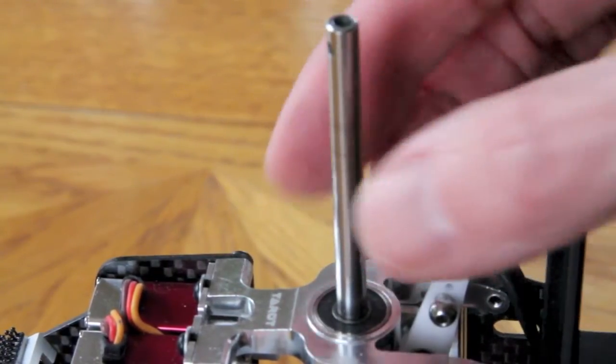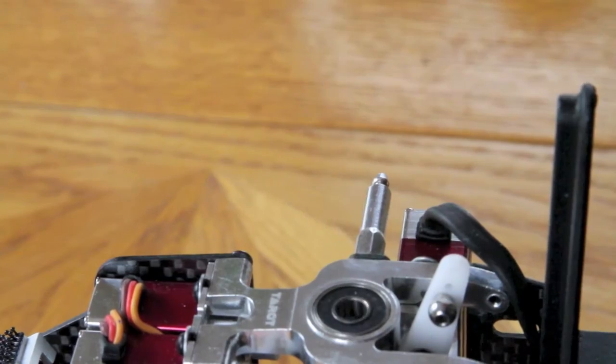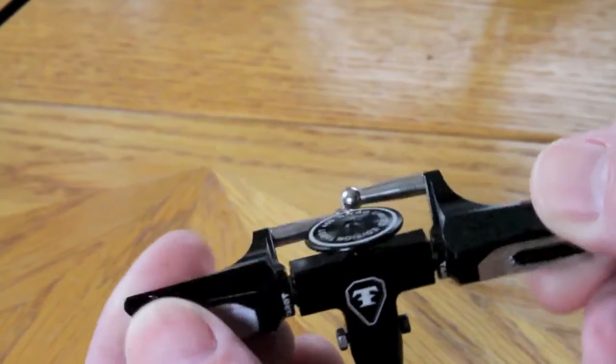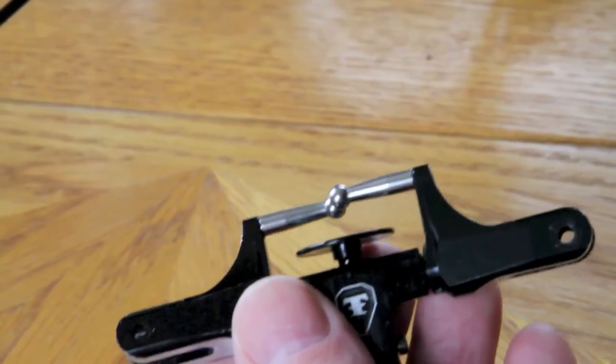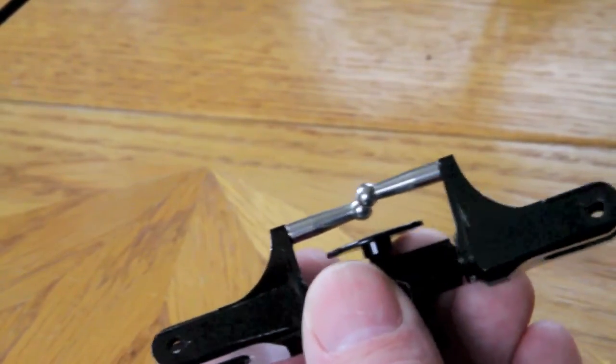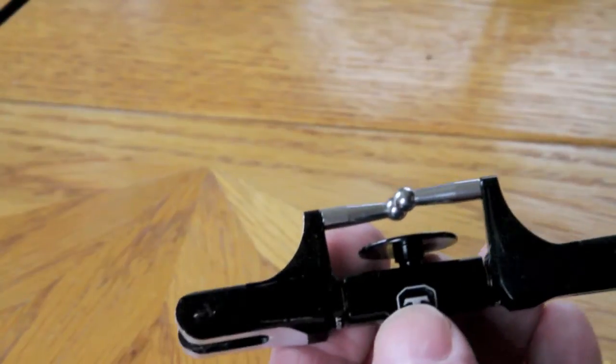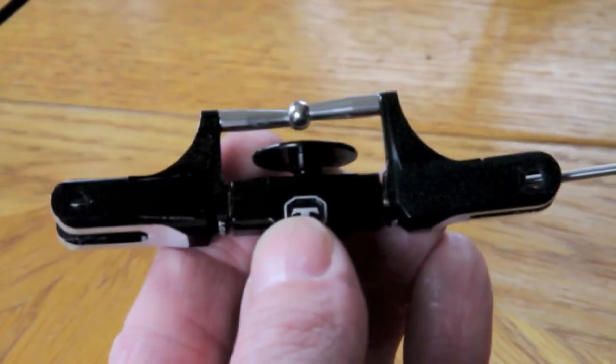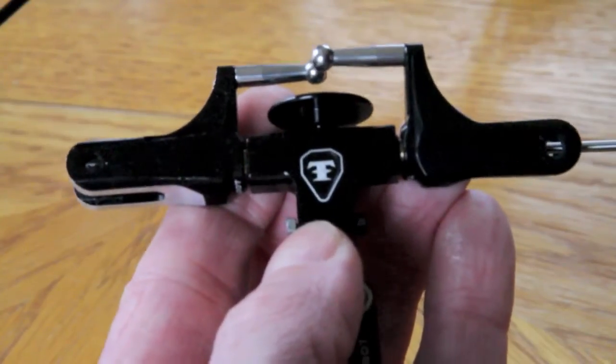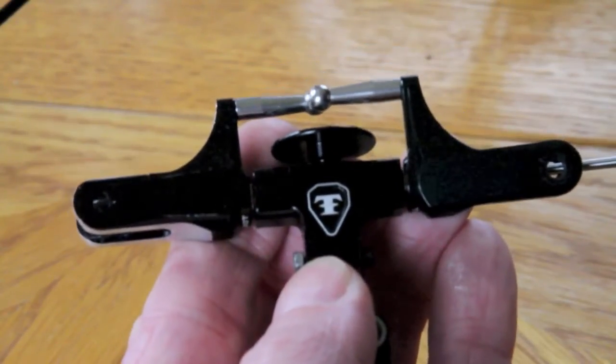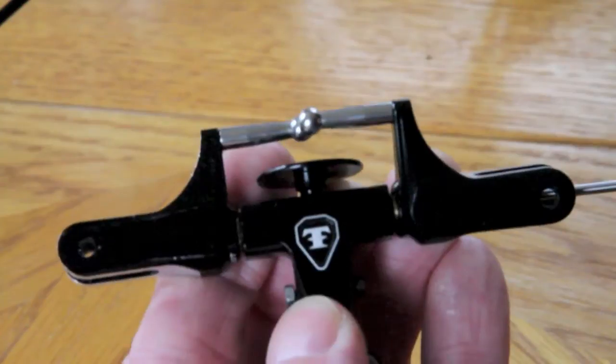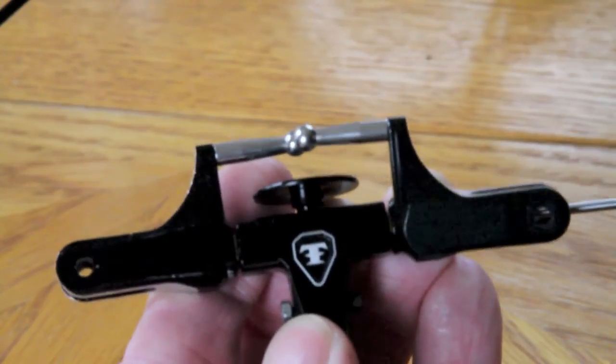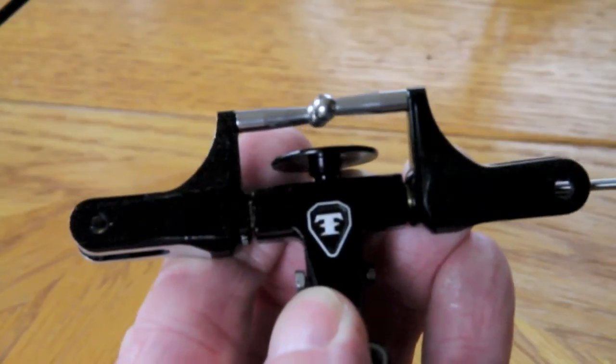As far as the feathering shaft goes, one easy way to tell if it's bent is before you disassemble the head—just stick a hex driver onto one end and while holding it, turn the hex driver. You'll see how the two blade grip ball links move in relation to one another. If they're moving like that, it means the feathering shaft is bent.